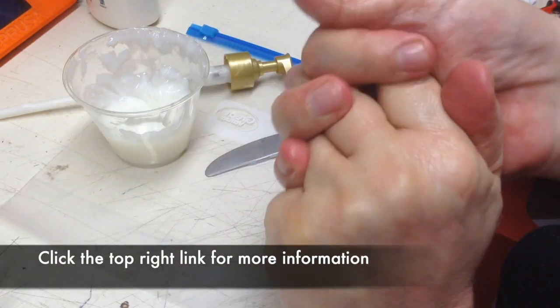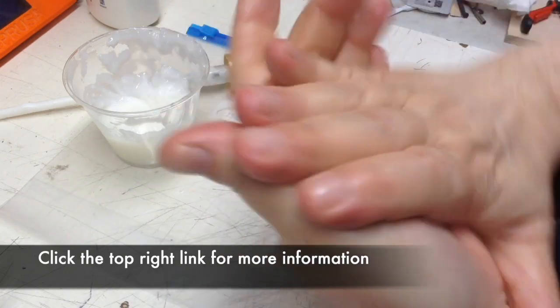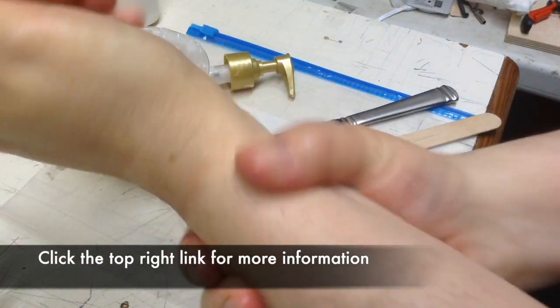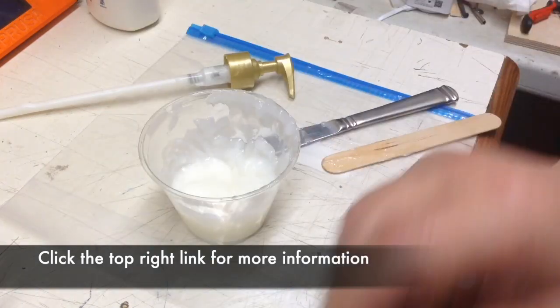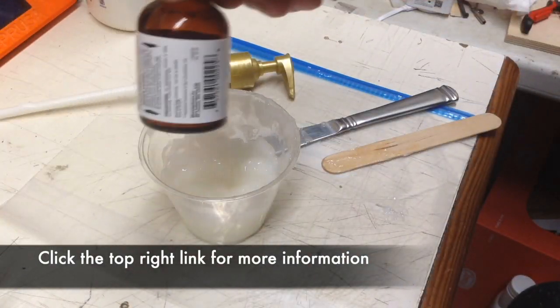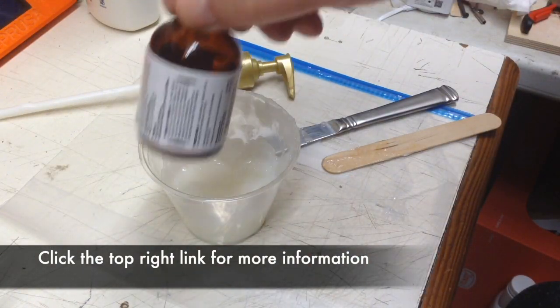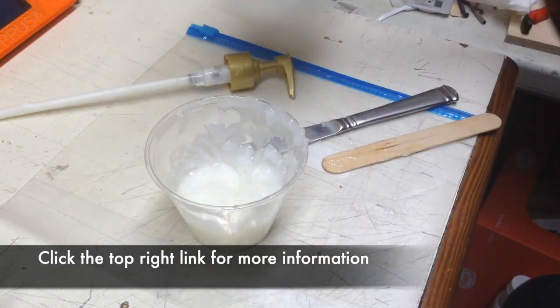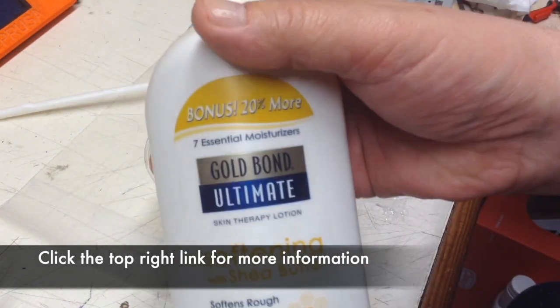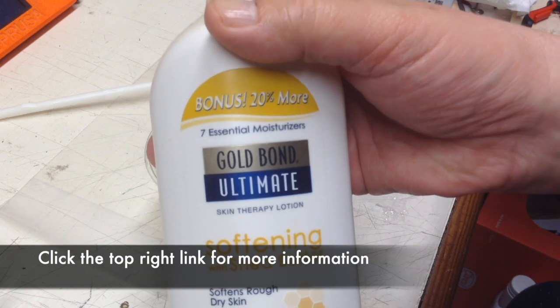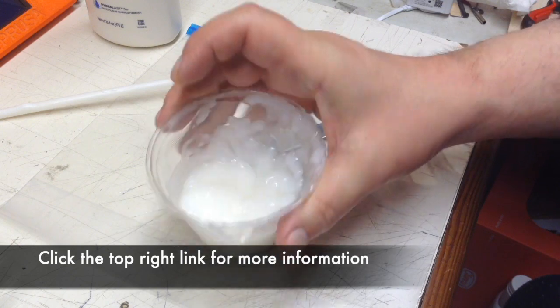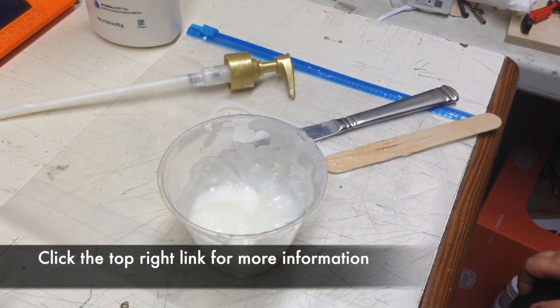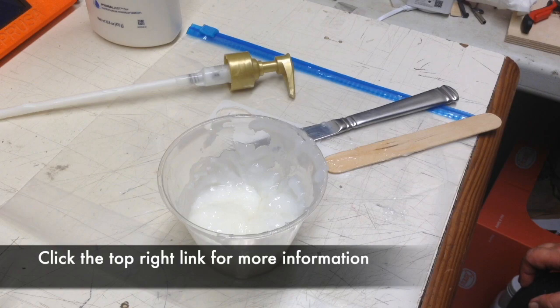Ta-da! So what was originally 1% Ivermectin Liquid, by getting mixed with Gold Bond Ultimate Skin Lotion half and half, this is now 1.5% Ivermectin Lotion.